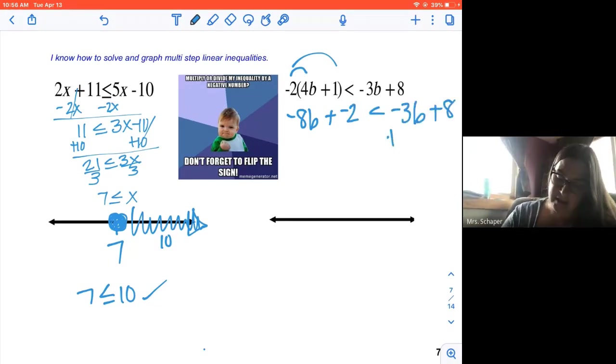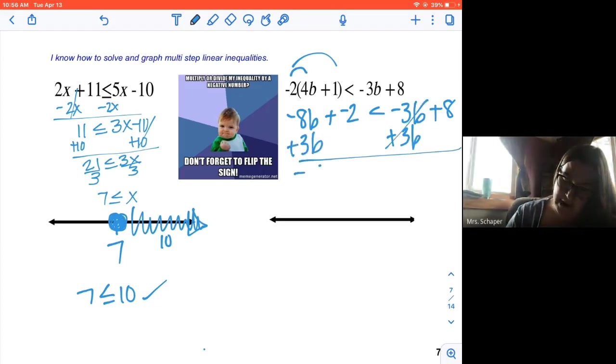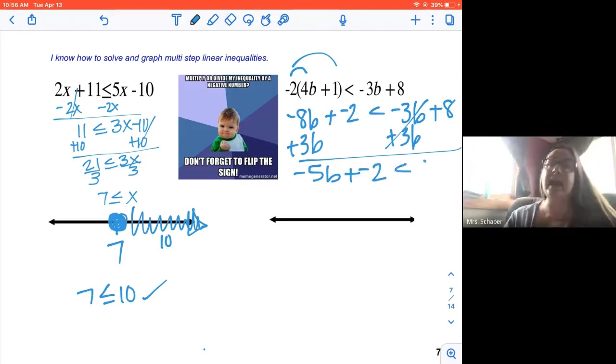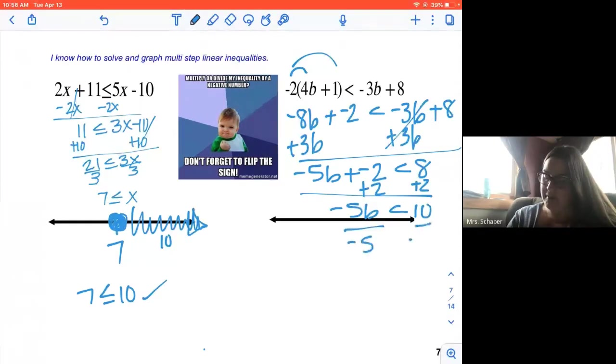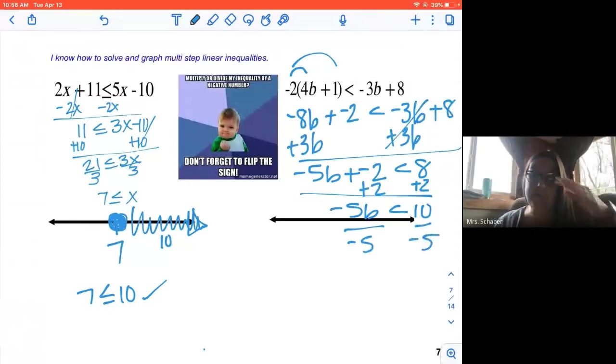So we're going to add three B to both sides. So negative five B plus negative two is less than eight. We're going to add two to both sides. So negative five B is less than 10. Oh, look what's happening here. Mathematicians, I'm dividing by a negative number.